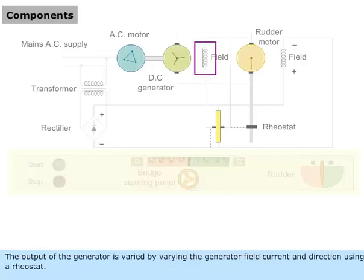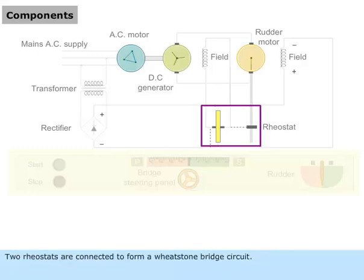The output of the generator is varied by varying the generator field current and direction using a rheostat. Two rheostats are connected to form a Wheatstone bridge circuit.